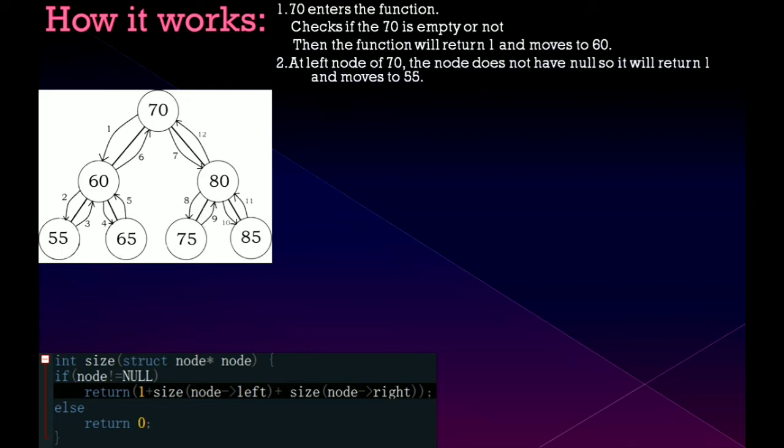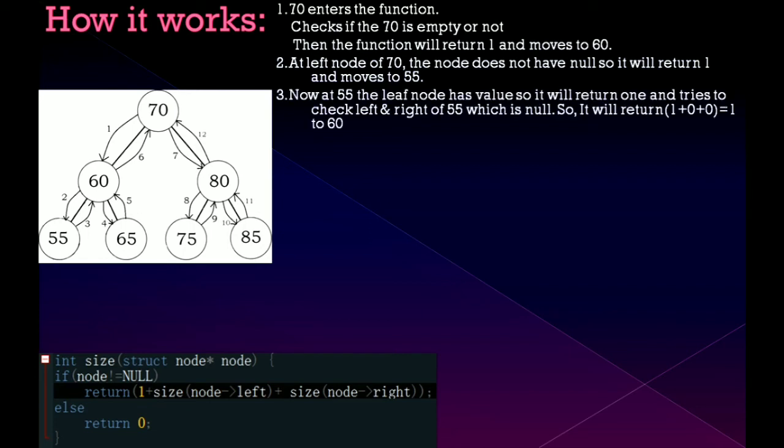At the left node of 70, the node does not have null so it will return 1 and moves to 55. Now at 55 the left node has value so it will return 1 and tries to check left and right of 55 which are also null. It will return 1 plus 0 plus 0 which is 1 to 60.